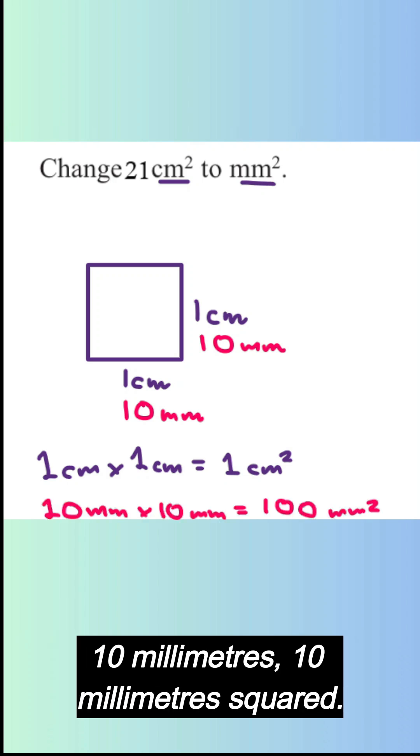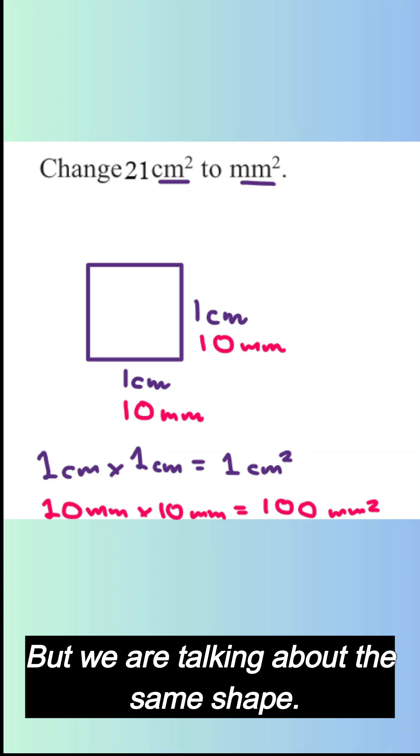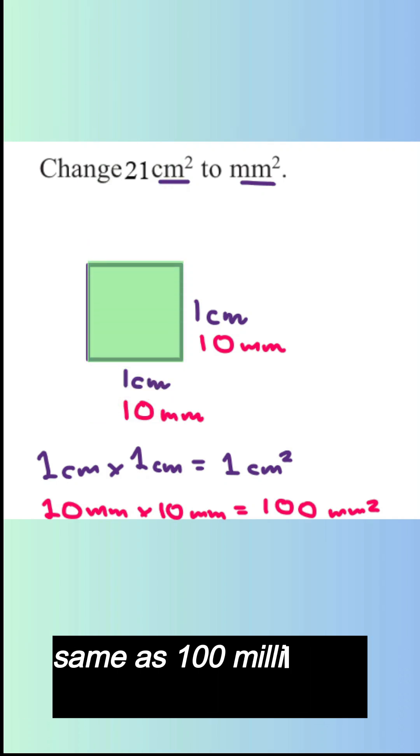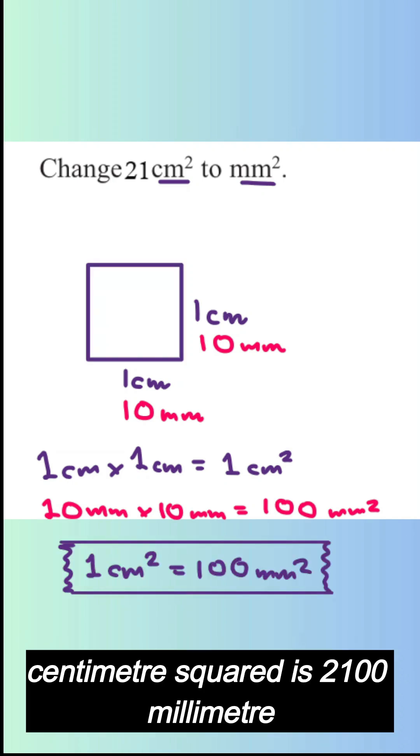Now let's get the area in centimeter squared: one times one, one centimeter squared. But in millimeters it is 10 millimeters times 10 millimeters, 100 millimeters squared. But we are talking about the same shape, so obviously one centimeter squared is the same as 100 millimeters squared. Therefore, 21 centimeters squared is 2,100 millimeters squared.